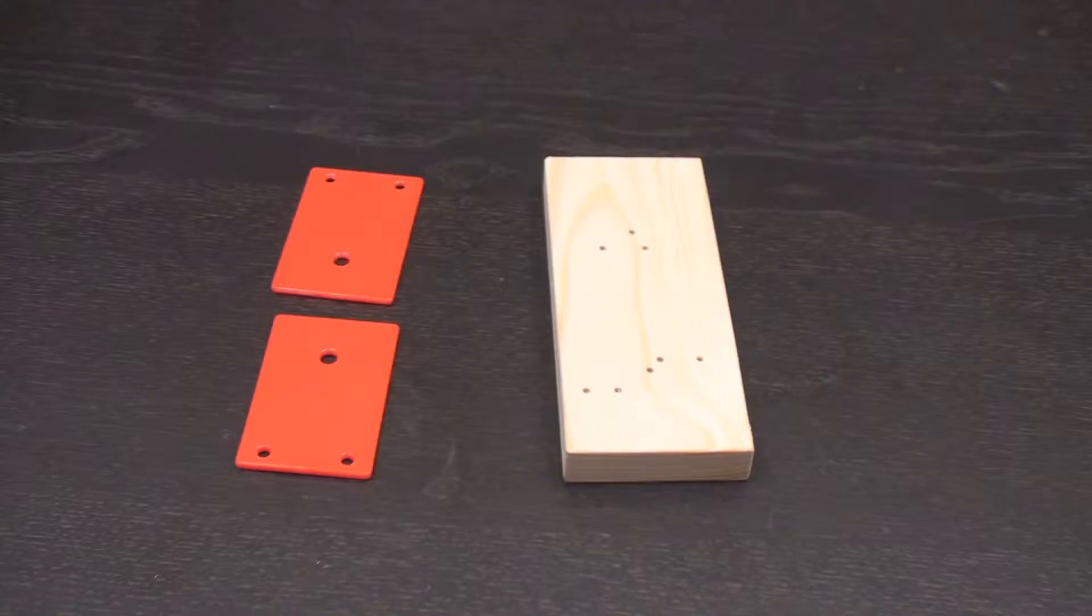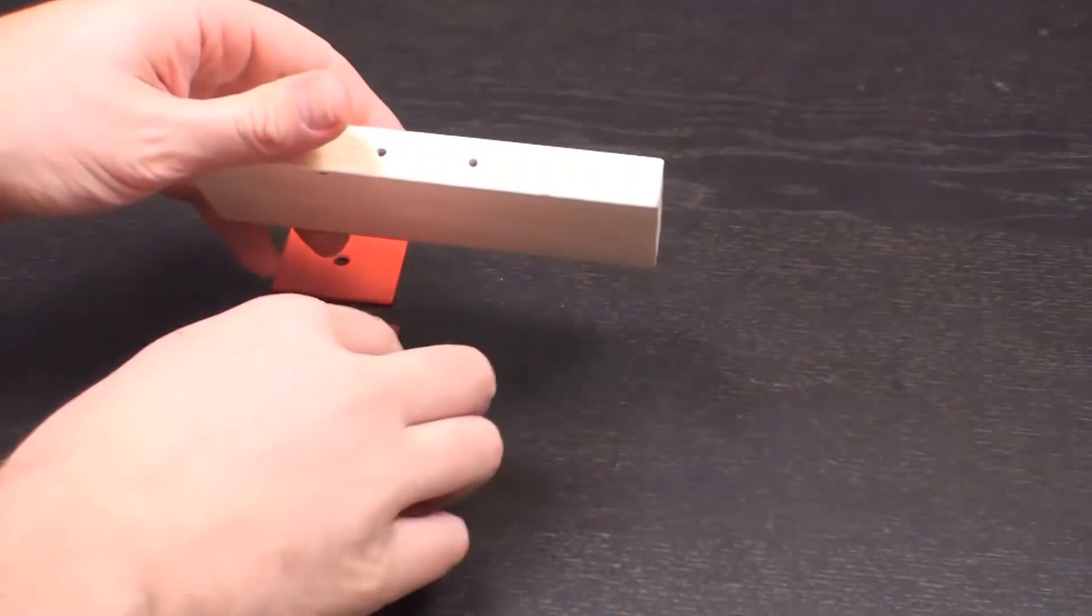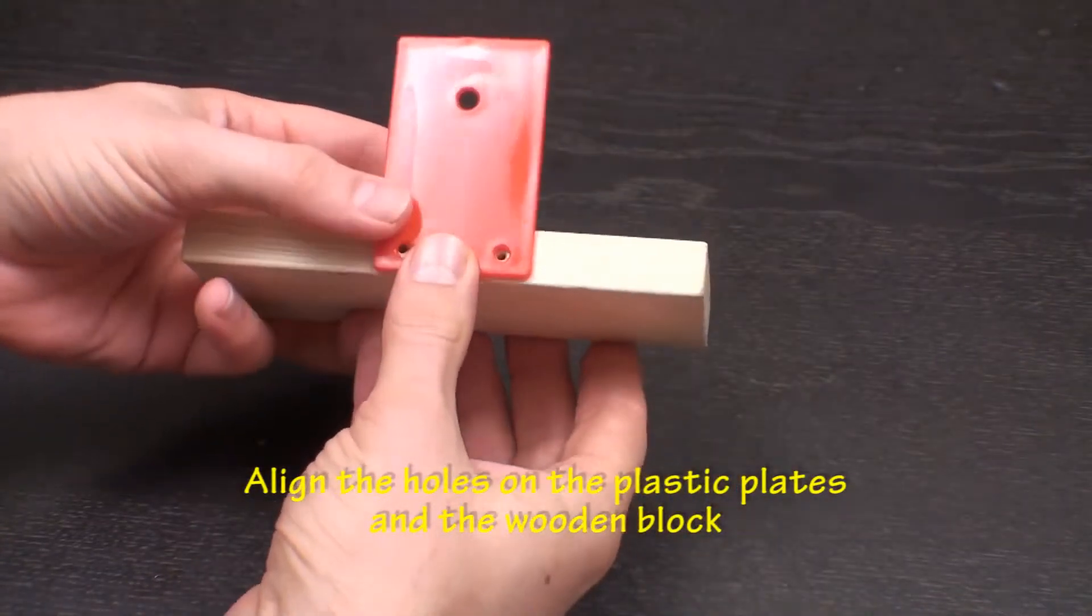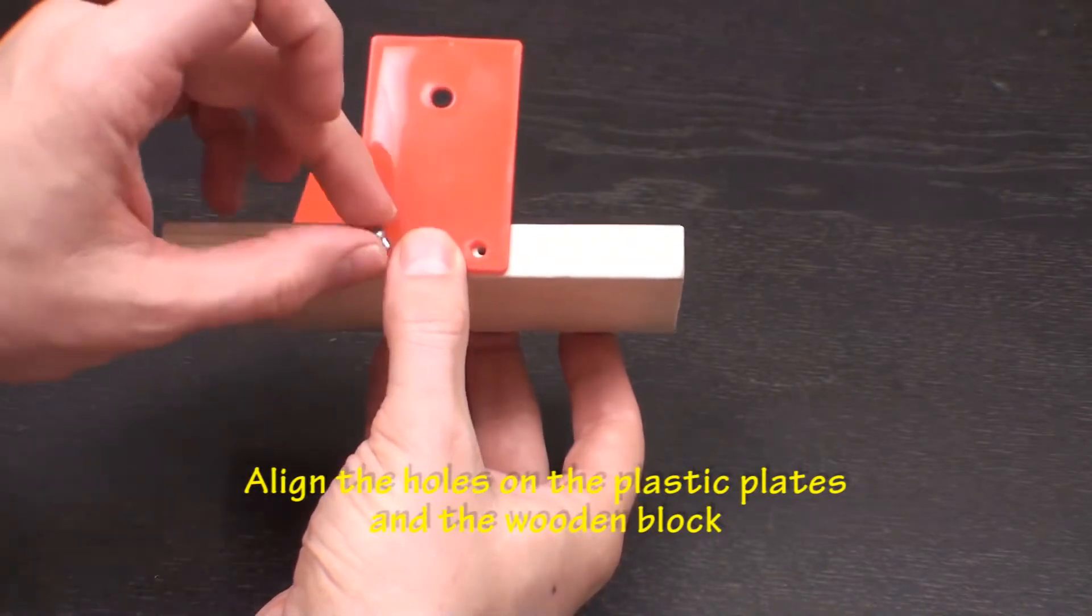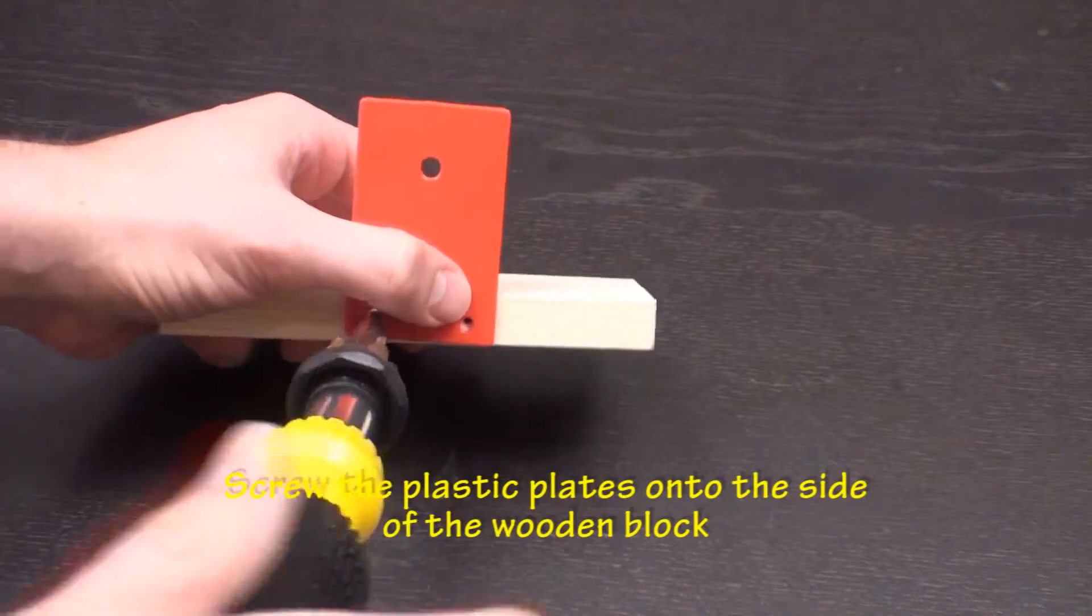To create the wire spool holder, you'll first need the wooden block and the plastic plates. Align the two holes at the bottom of the plastic plates with the holes in the side of the wooden block. Screw the plates in using the small screws.